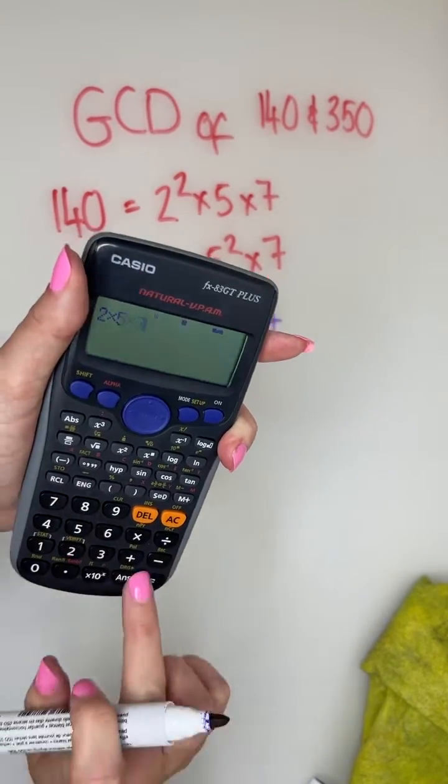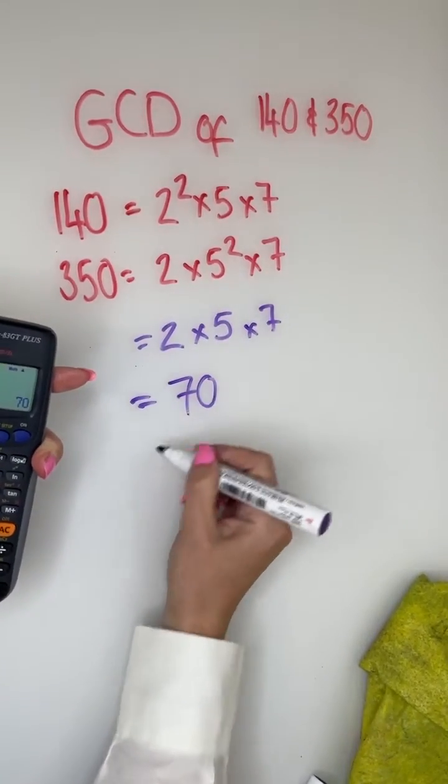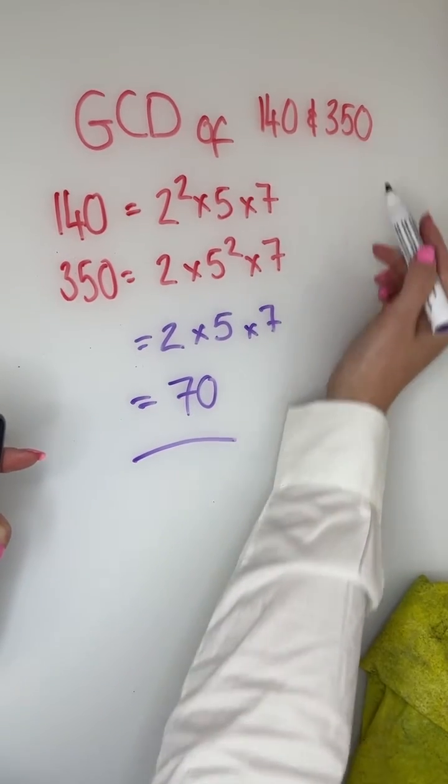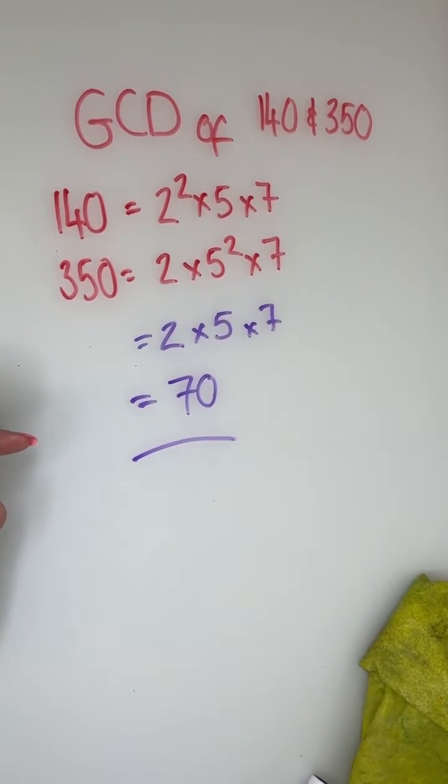2 multiplied by 5 multiplied by 7. GCD of 140 and 350 is 70.